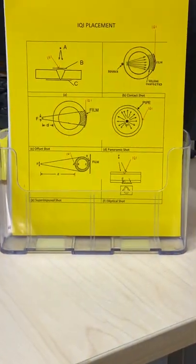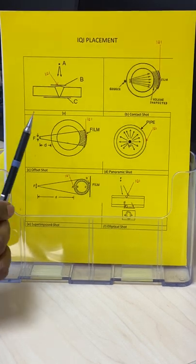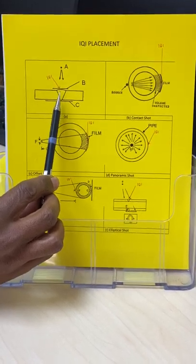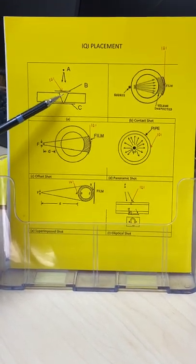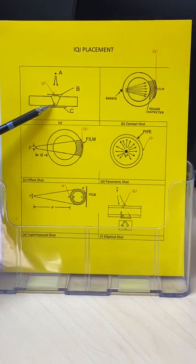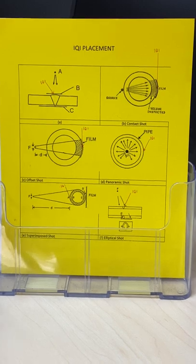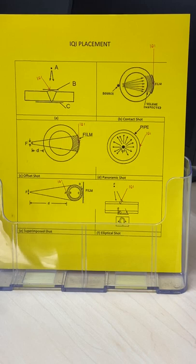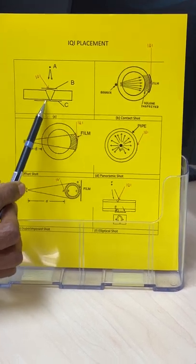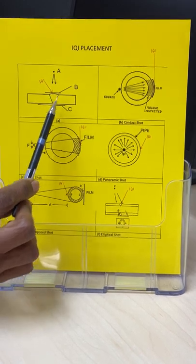The placement of the IQI relates to geometrical unsharpness. The further away a defect is from the film, the worse the image gets — blurriness or UG increases. At the film surface the UG will be zero, and as you move toward the source the UG starts increasing and the image gets more blurry. For that reason, the IQI is placed on the source side. The test piece side toward the source is called the source side, and the side touching the film is called the film side.